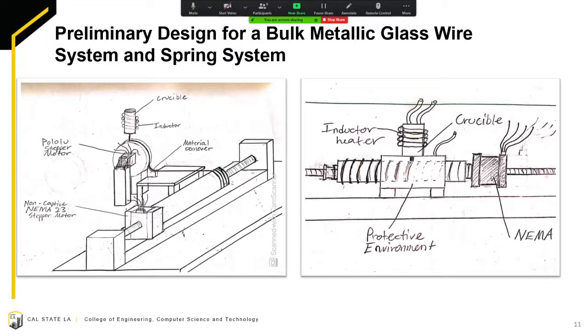With that being said, we were able to create a preliminary design for a bulk metallic glass wire system and a spring system. In the illustration to the left, you can see a wire-making system for bulk metallic glass. On the right is a preliminary design for the system for making springs out of bulk metallic glass.